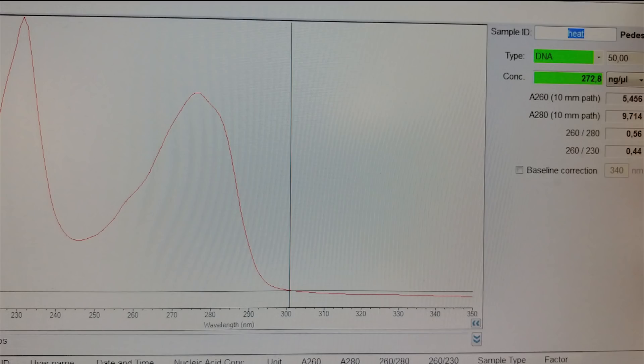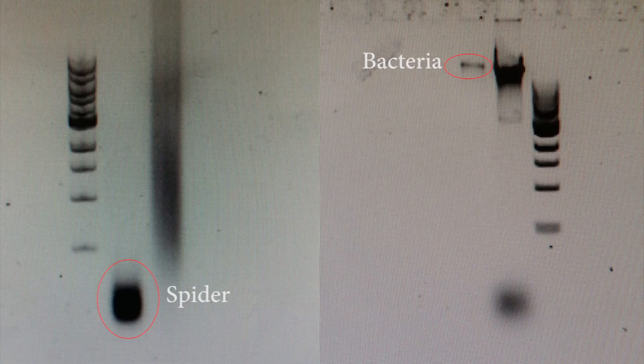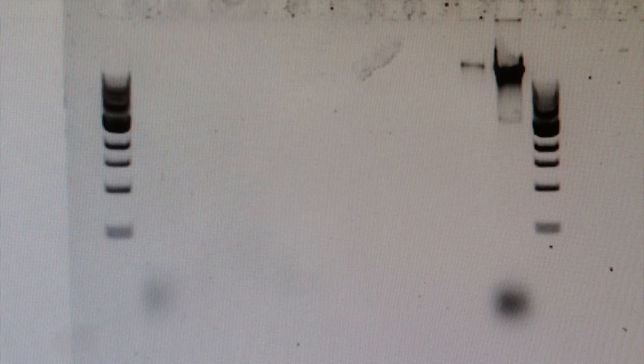The spectrometer said we had hundreds of nanograms of DNA, but when we ran it on a gel, there was clearly no DNA present. This is because the spectrometer can easily be set off by protein or other chemical contaminants left over from the extraction. We've since run both samples on a gel, and we finally got lots of DNA out of the bacteria and spiders. We actually saw the bacterial result in the gel doc video.